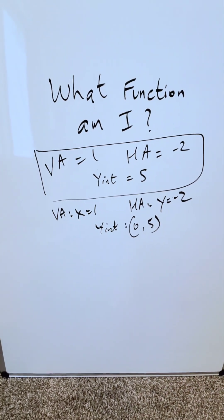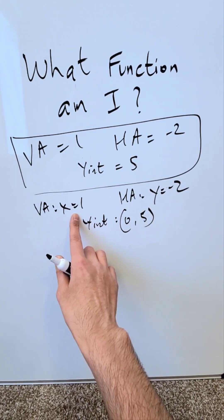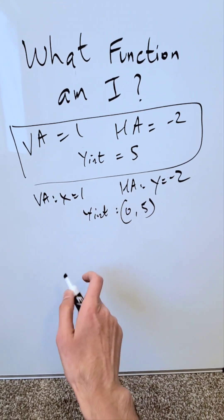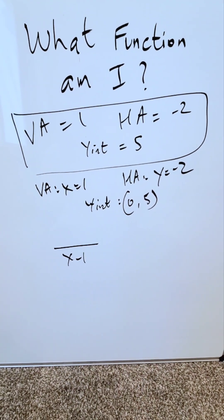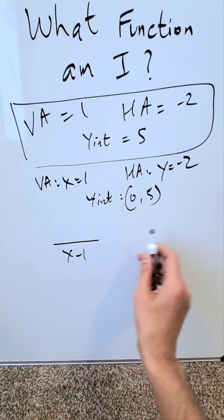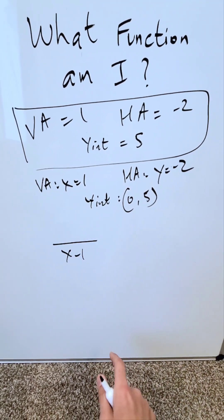Given this information, you know you are looking here at a rational function. Use this vertical asymptote to develop your denominator polynomial. The zero of the function would have been what? x is equal to 1. Because you're dealing with x minus 1 equals 0, you'd solve for x, you'd have a 1. That would represent your vertical asymptote.